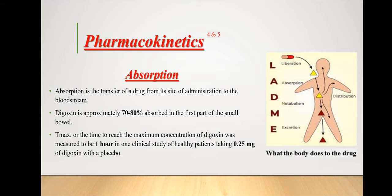Absorption is the movement of the drug across the membrane of the site of administration into the bloodstream. It can occur through passive diffusion, active diffusion, facilitated diffusion, or endocytosis and exocytosis. The absorption site of digoxin is the first part of the intestine, and approximately 70 to 80 percent is absorbed there. It has a fast absorption rate, and maximum blood concentration is obtained in almost one hour.